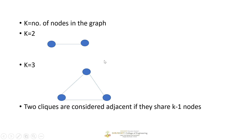Let's draw a clique with value k equal to 2. A clique with k equal to 2 will have two nodes — node 1 and node 2 — and both nodes will be connected to each other. Let's take one more example: a clique with k equal to 3 will have 3 nodes — node 1, node 2, and node 3.